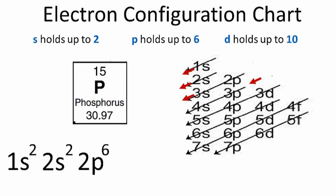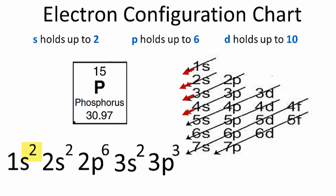In that third row, after the 2p, we have the 3s. We'll put 2 electrons in the 3s — we've used 12. In the fourth row, the first term is 3p. We can put up to 6 electrons in a p orbital, but since we've already got 12 in the orbitals before it, we only need to put 3. That gives us 15: 2 plus 2 plus 6 plus 2 plus 3 equals 15, the number of electrons in phosphorus.